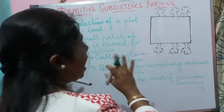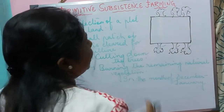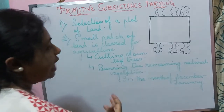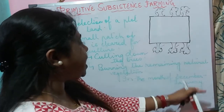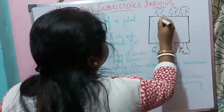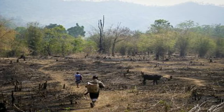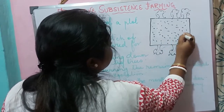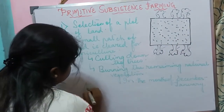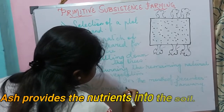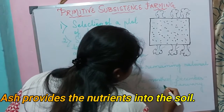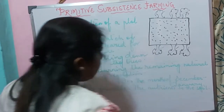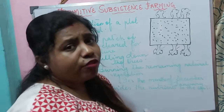This clearing is done in the months of December and January. After this, the ash obtained by burning the remaining vegetation is mixed with the soil — it is spread over the land and then mixed in. The ash provides nutrients to the soil.